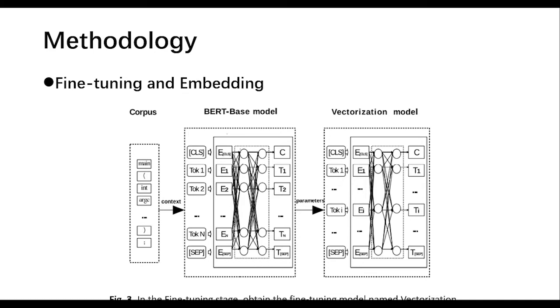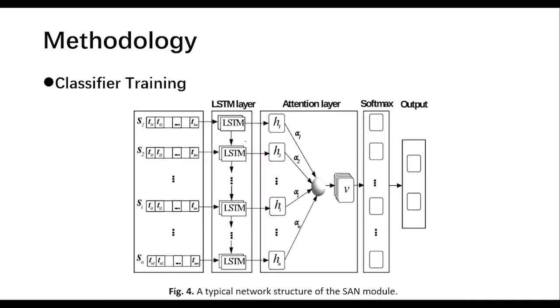The parameters are fine-trained in vectorization model end-to-end. Vectorization model is applied to obtain the vector representation of context. Vectorization model takes the balanced source codes as input, then outputs the vector representation after extracting text features. In the SAN module, key parts in vulnerabilities can be detected through the role of attention mechanism, and they are often important.